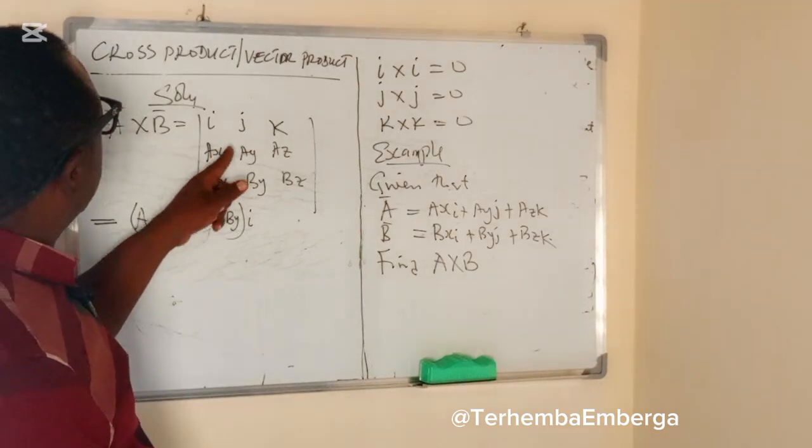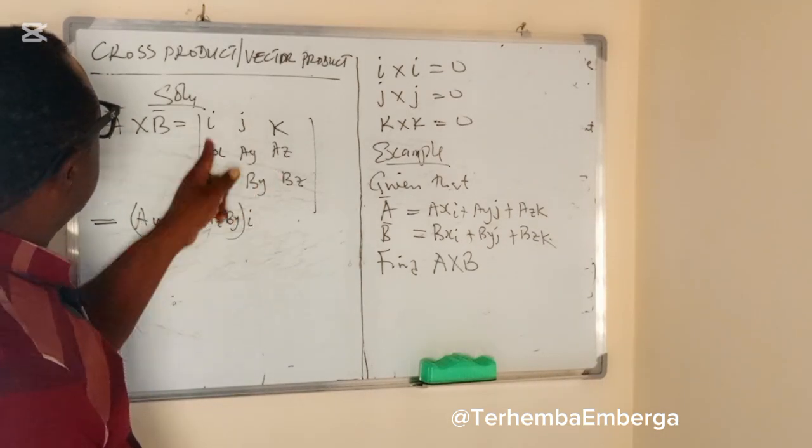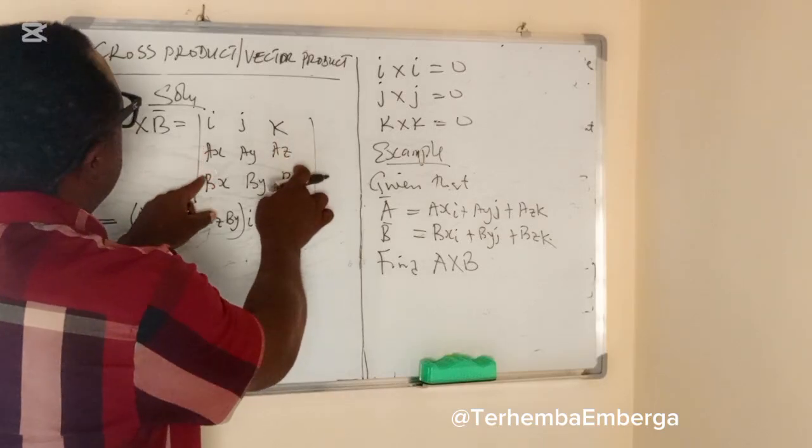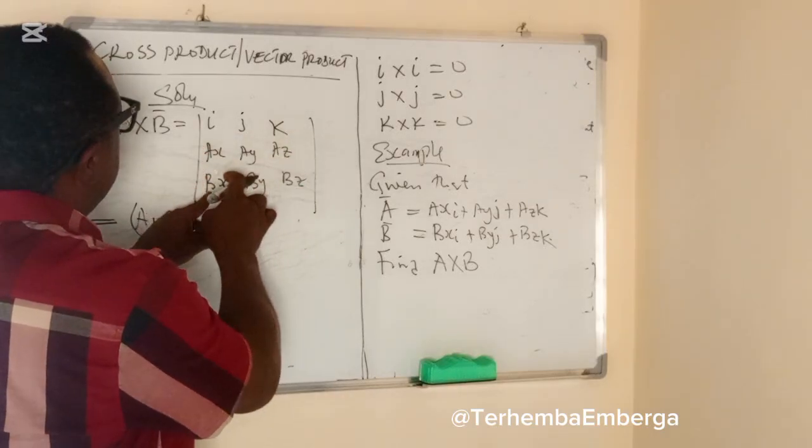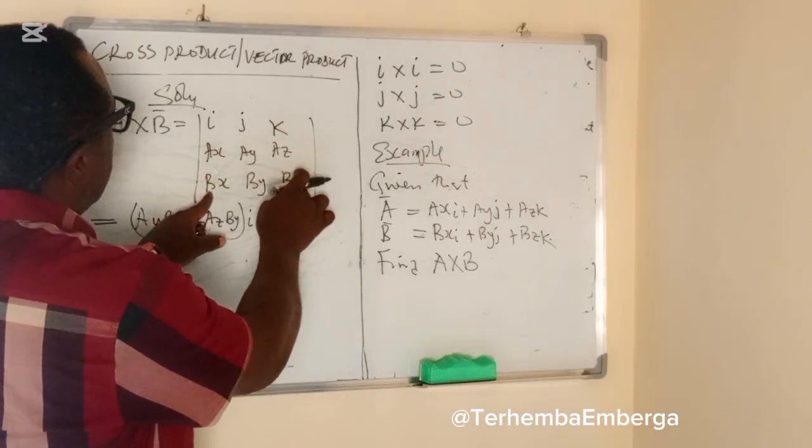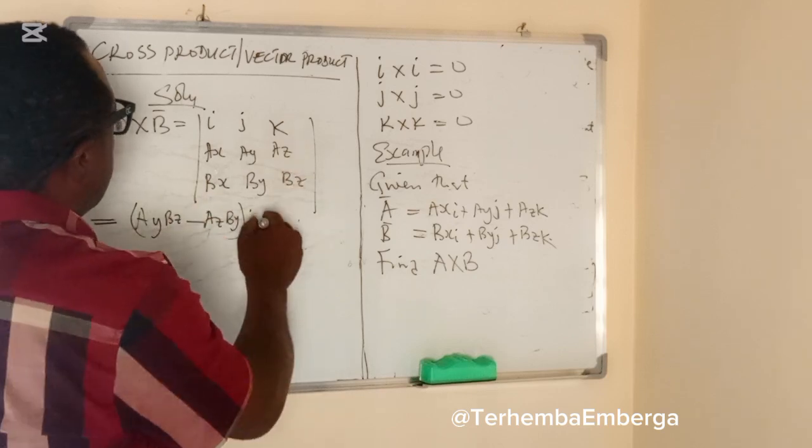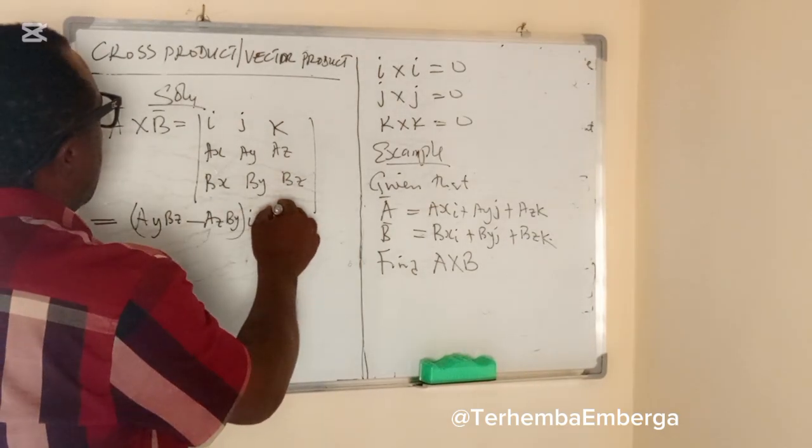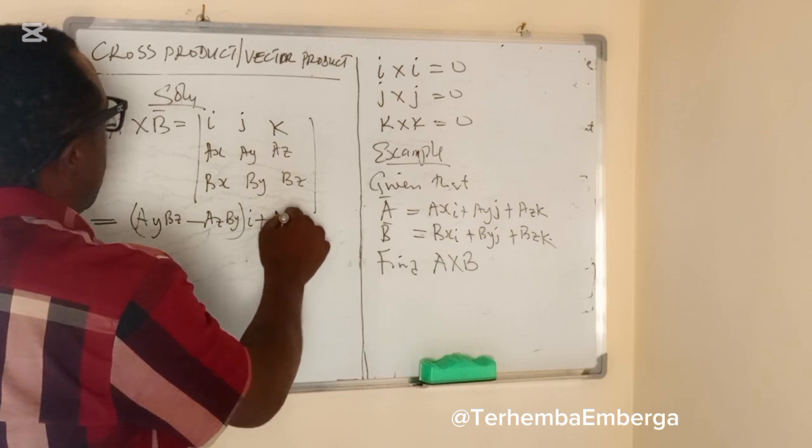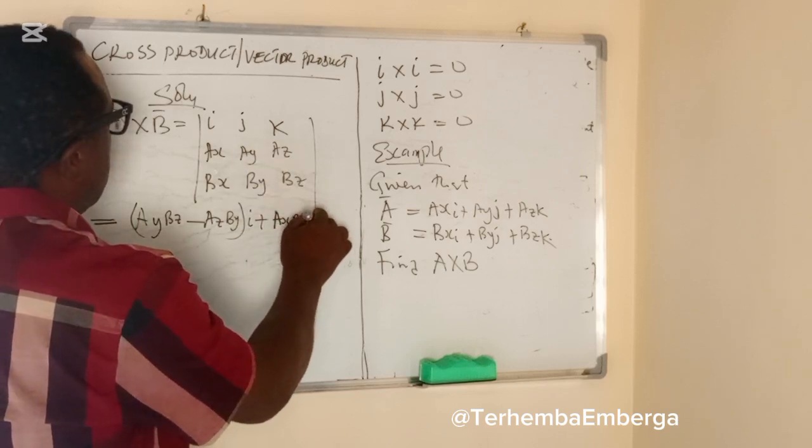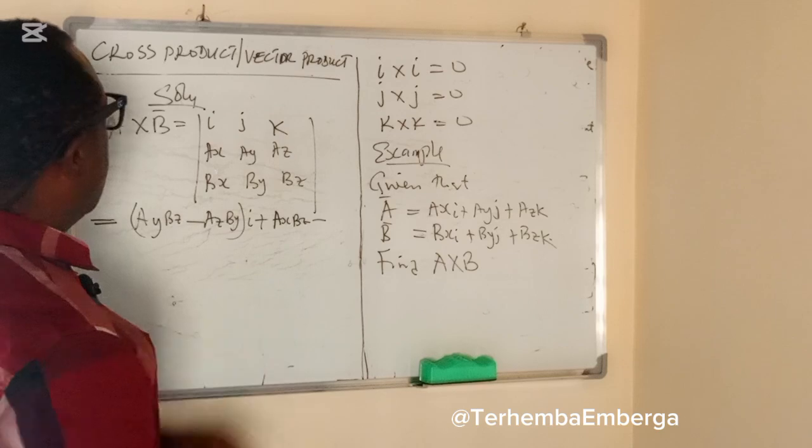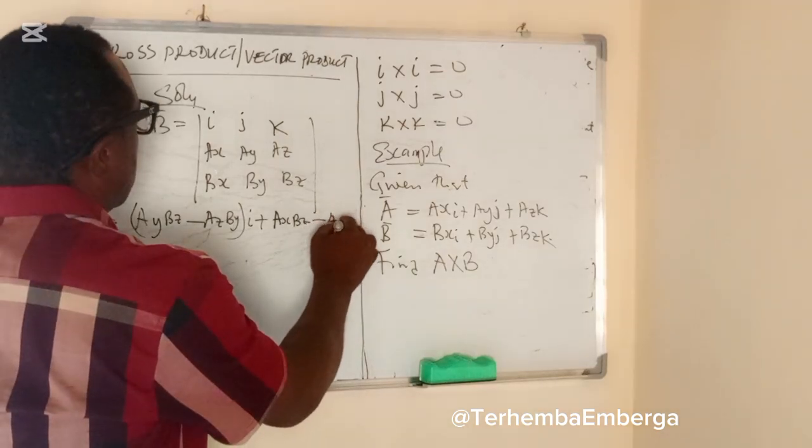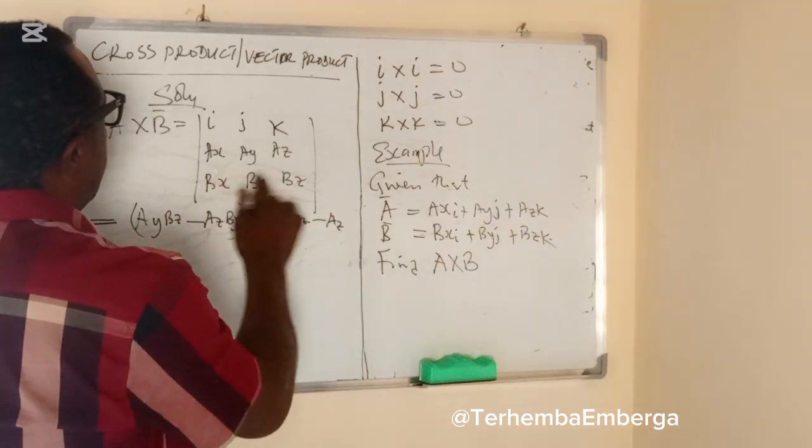For the second one J, we're left with this: AX AZ BX BZ. Start with plus AX multiplied by BZ minus AZ BX, that is J.